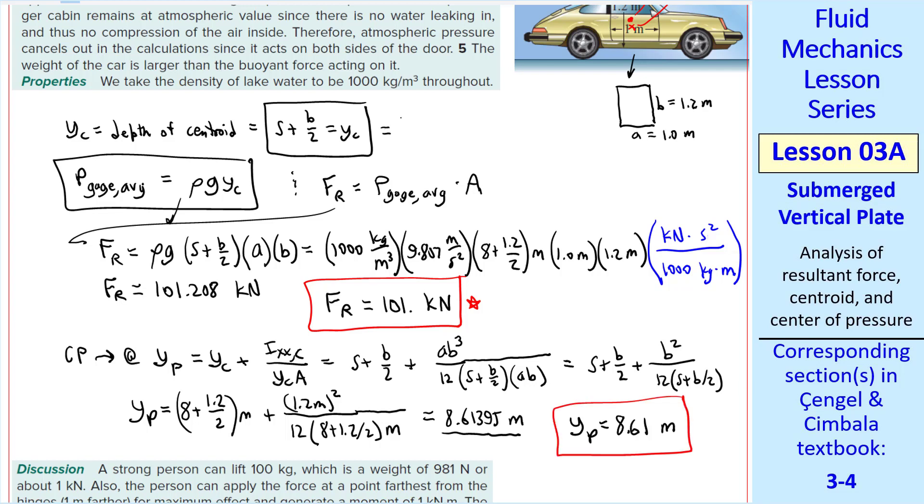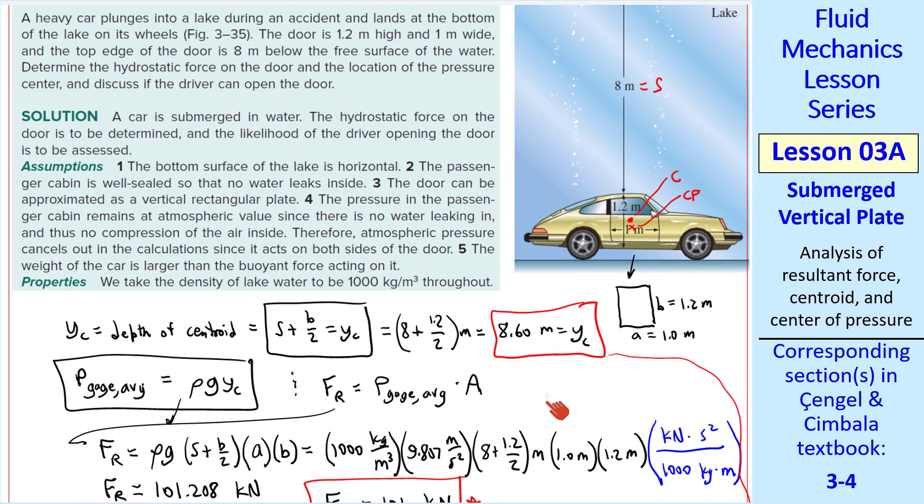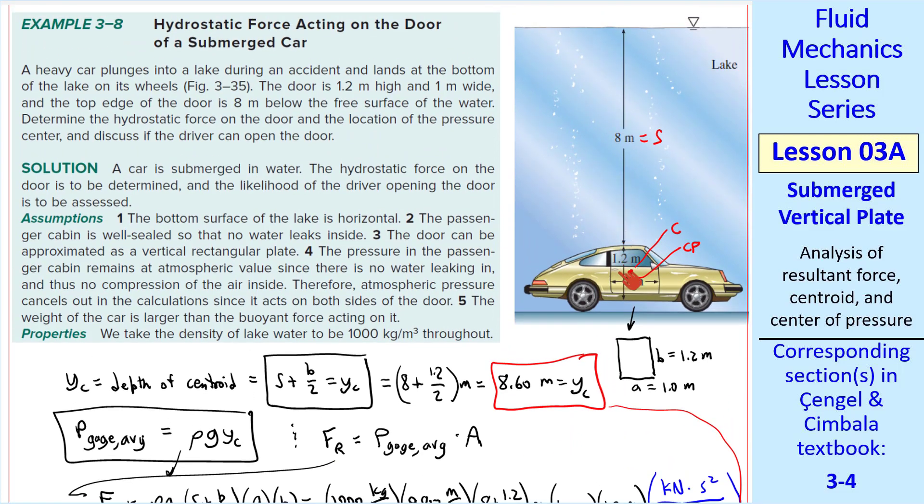Let's compare that to YC. Plugging in the numbers, we get YC is 8.60 meters. Comparing these two, we see that YP, the depth to the center of pressure, is just a little bit bigger than the centroid depth. That's because the car is submerged a pretty significant amount.